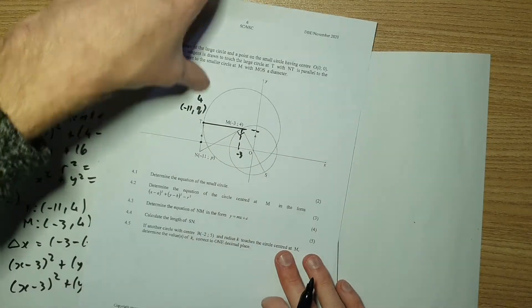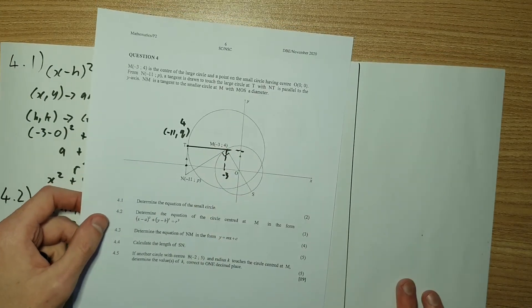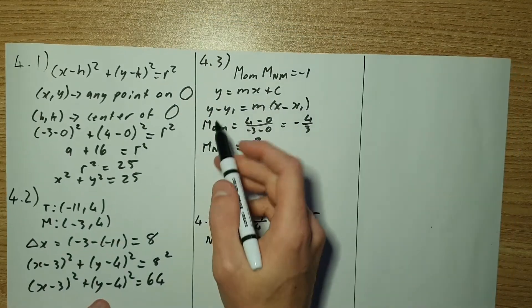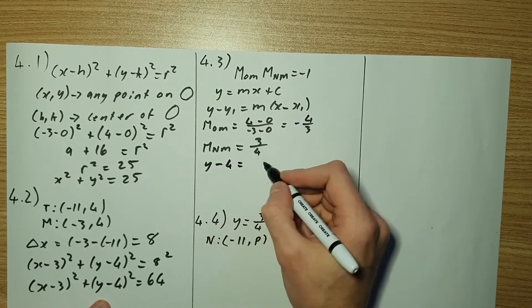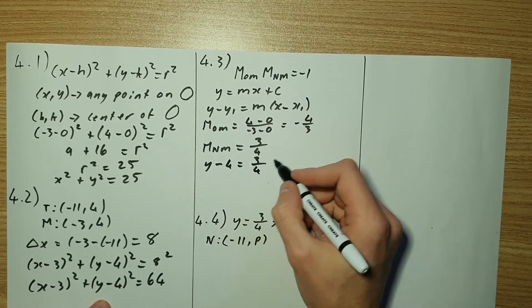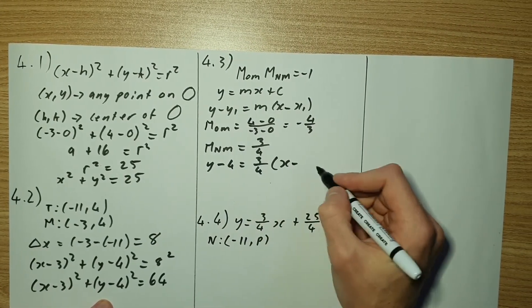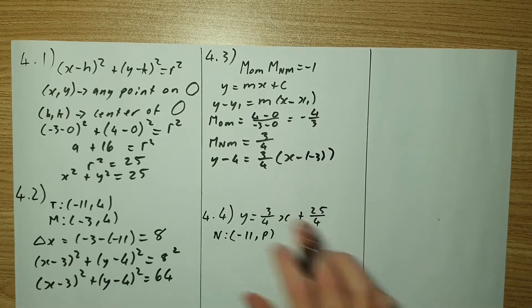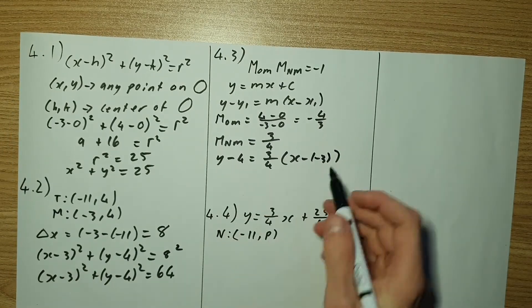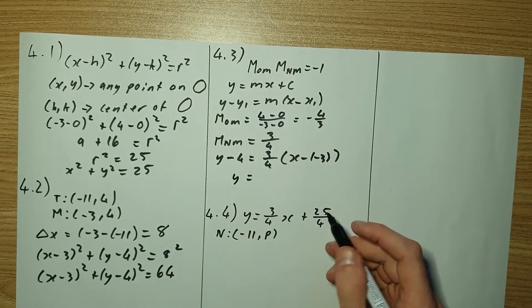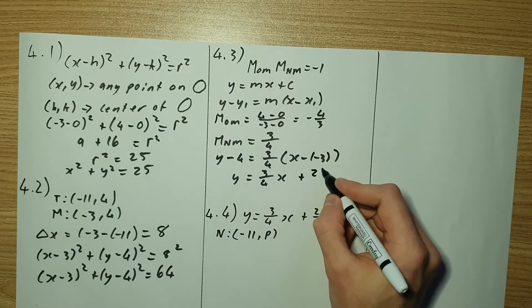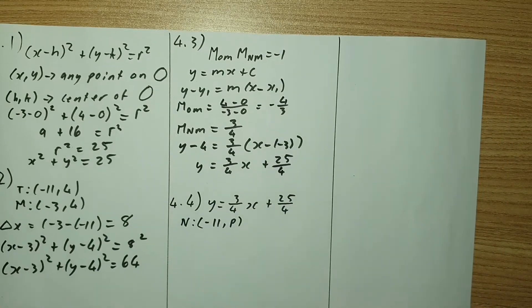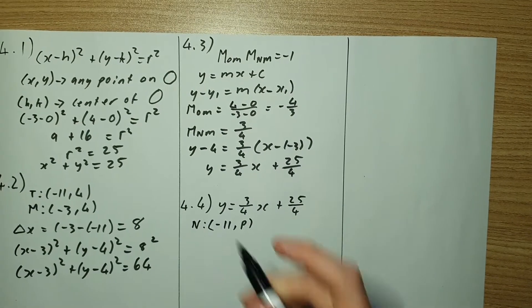Now that we have the gradient, and also the point negative 3 and 4, we can find the equation. Using the point-slope formula: y minus 4 equals 3 over 4 times (x minus negative 3). Sorting out the algebra, you get y equals 3 over 4 x plus 25 over 4. That's the equation of NM.